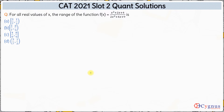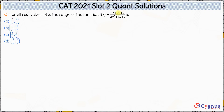Now coming to this question — this is a slightly tricky question. We have to figure out the range of the function f(x) which is x² + 2x + 4 divided by 2x² + 4x + 9.